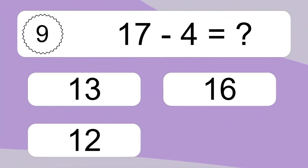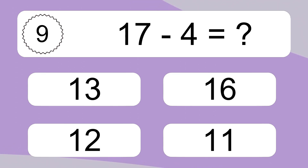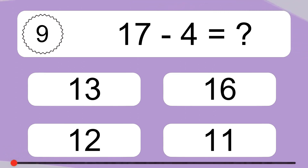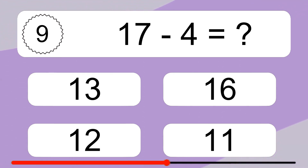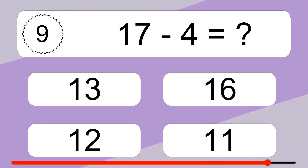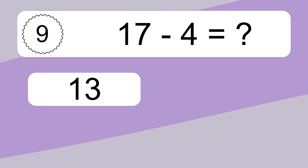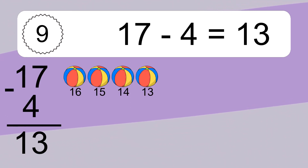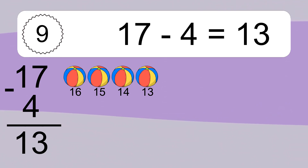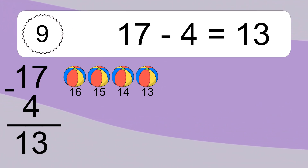17 minus 4 equals what? 17 minus 4 equals 13. Let's count it: 16, 15, 14, 13.